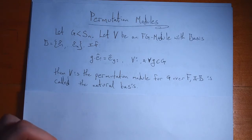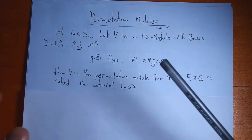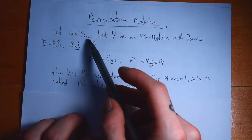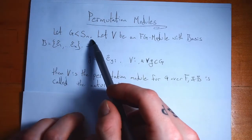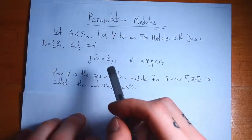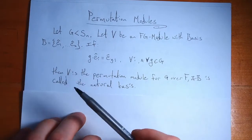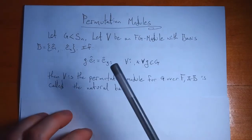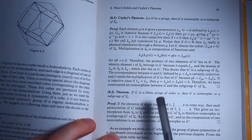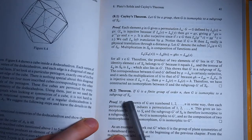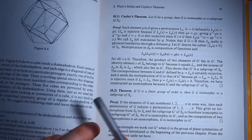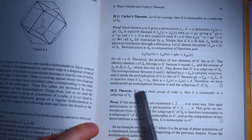Permutation representations are sort of the golden retrievers of representations — you can always construct them and they're always faithful. Unfortunately this is where the analogy breaks down. The trouble with permutation modules is that you need a vector space of the same dimension as n, so for S_15 you're looking at 15×15 matrices, which can get ugly fast. But you can always construct them and they will always be faithful. In some sense, we're kind of done looking for representations: by Cayley's theorem, any finite group of order n is isomorphic to a subgroup of S_n, so for any group whatsoever, we can construct a permutation module and from it a representation.